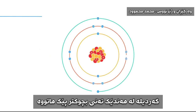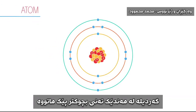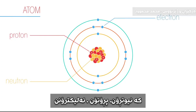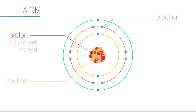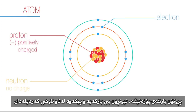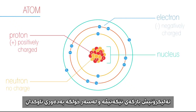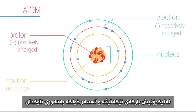An atom is composed of subatomic particles called protons, neutrons and electrons. Positively charged protons and neutrons with no charge form the central nucleus. Negatively charged electrons orbit the nucleus.